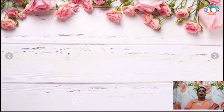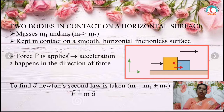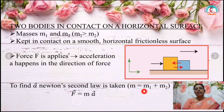Now let us see the next application: finding the forces acting on two bodies in contact on a horizontal surface. Consider two blocks of masses M1 and M2, where M1 is greater than M2. Both are kept in contact with each other on a smooth frictionless horizontal surface. By applying horizontal force F, both the blocks are set into motion with acceleration A in the direction of force F. To find acceleration using Newton's second law, since the two blocks are moving together, we can consider the combined mass M equals M1 plus M2.